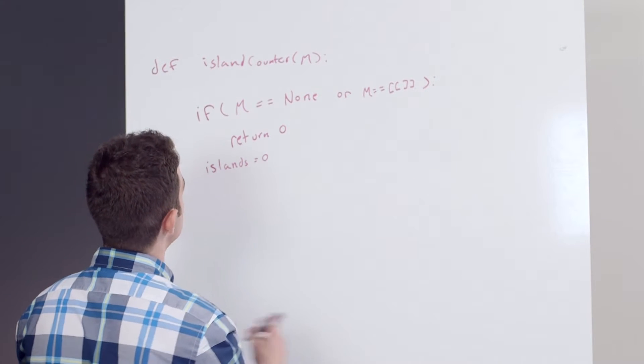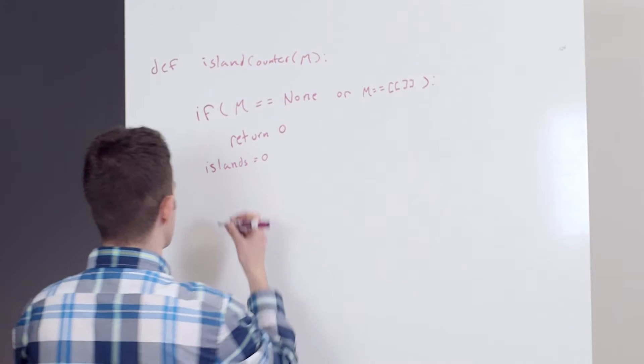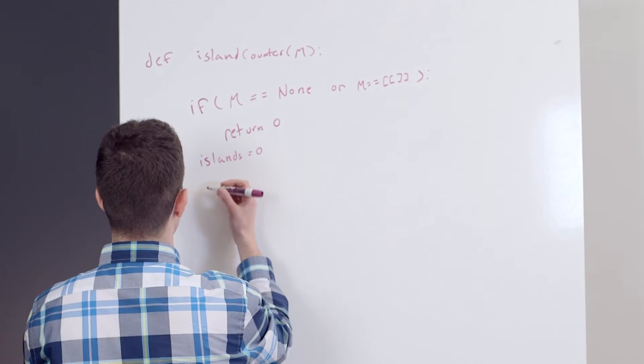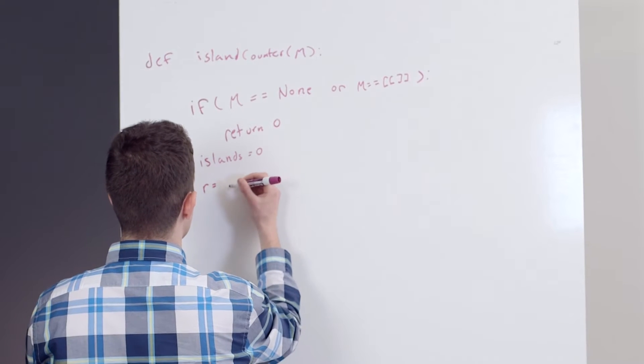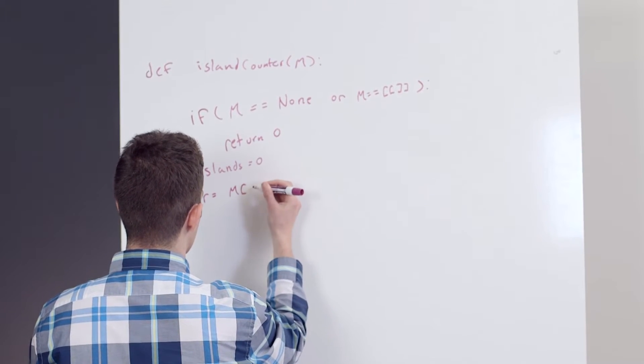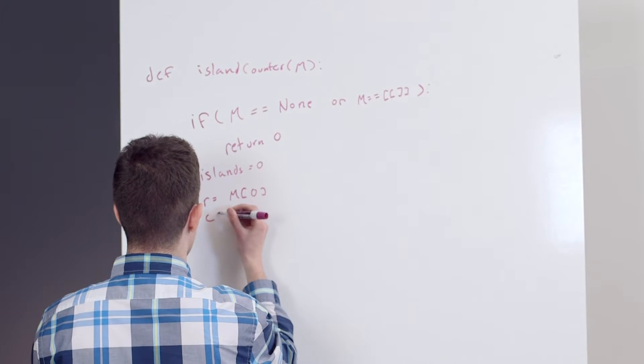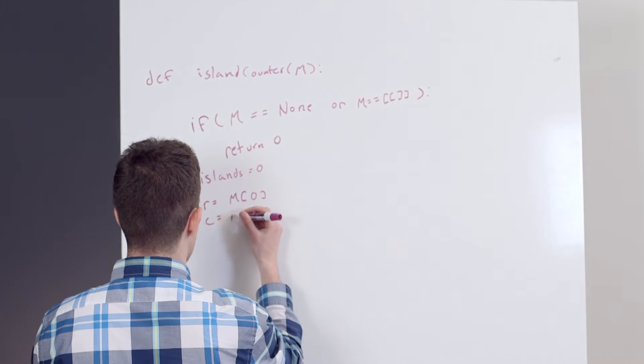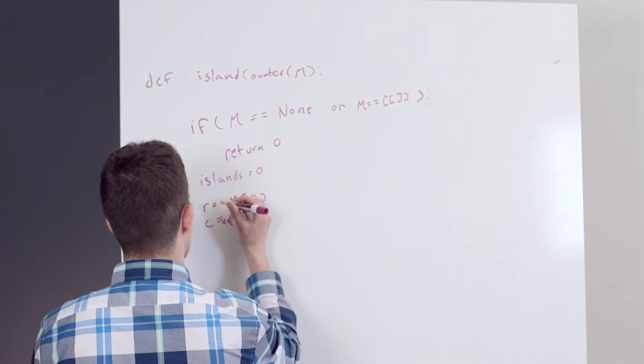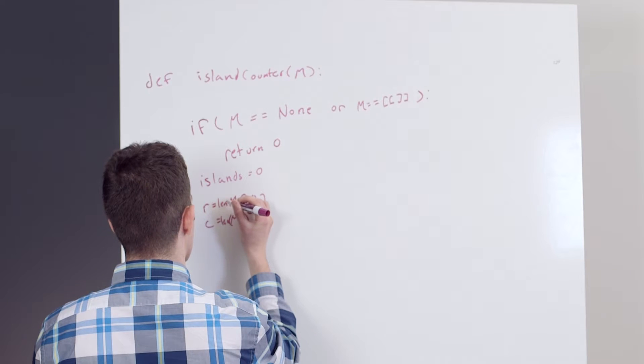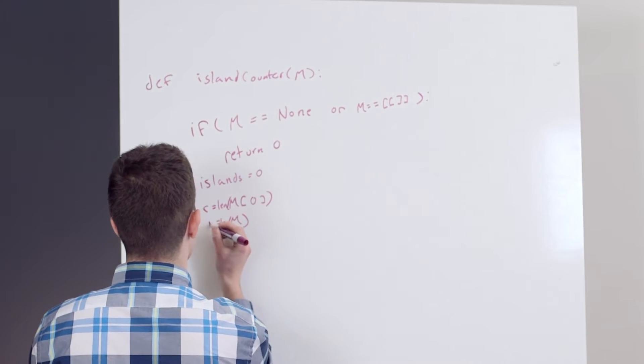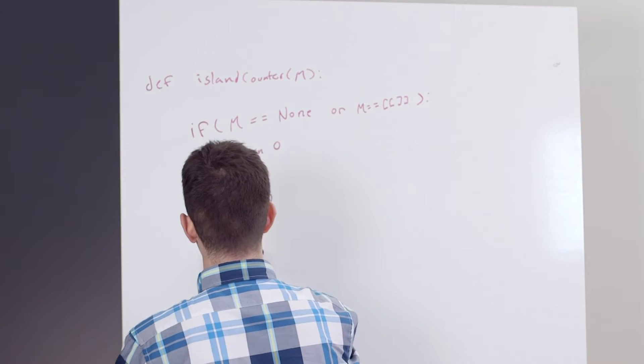And I'm going to want to do two for loops to look through this. So I want to know the number of rows and columns. So this is actually going to be vice versa here. So I'm going to write my for loop.